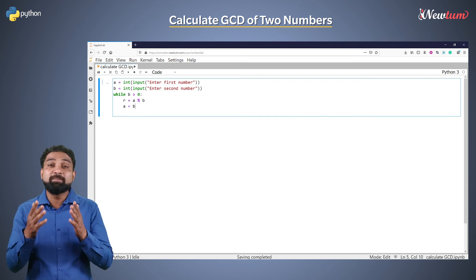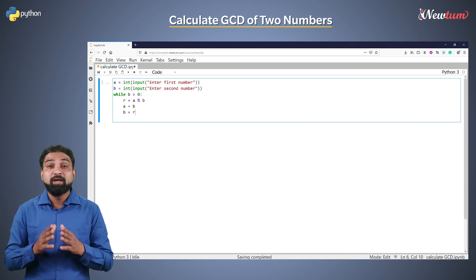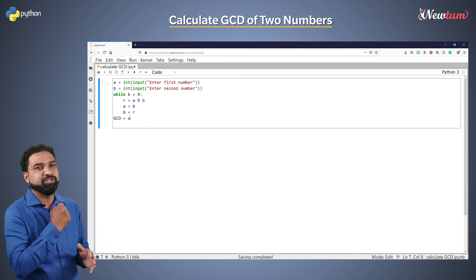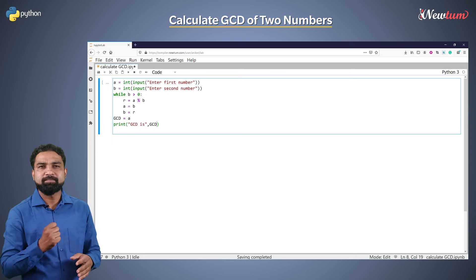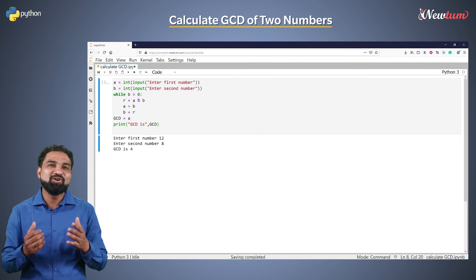After the while loop is complete, assign the value of a to the GCD variable and print it. Let's run the program. Enter the input as 12 and 8. Well, we got the correct output!